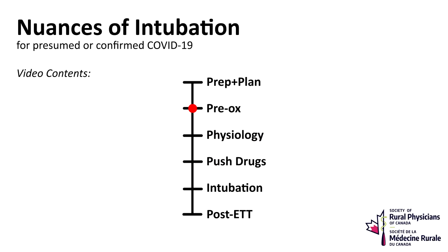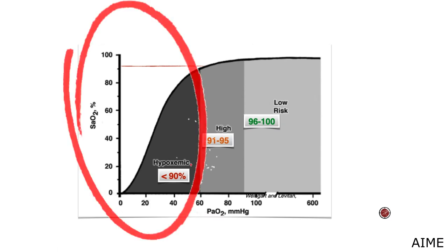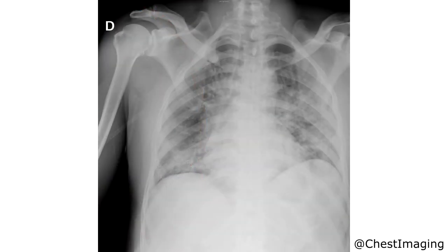Previous videos have discussed pre-oxygenation in detail. Your goal should be around 3 minutes of 100% FiO2. Positive pressure is often helpful. It's exceptionally important to optimize these patients from a physiologic standpoint. You should do what you're used to, but know that these patients will have profound apnea intolerance. So anything you can do to increase your safe apnea time is helpful.